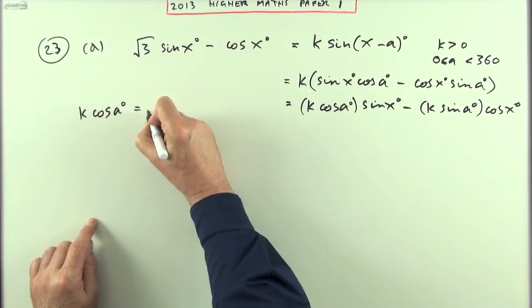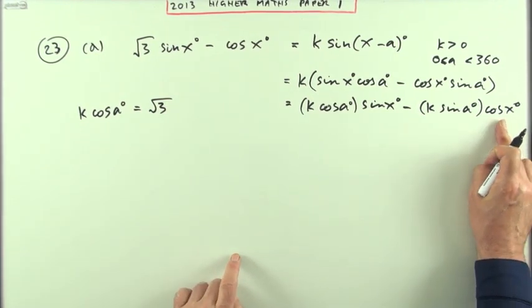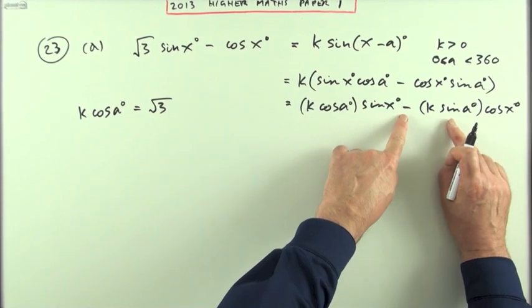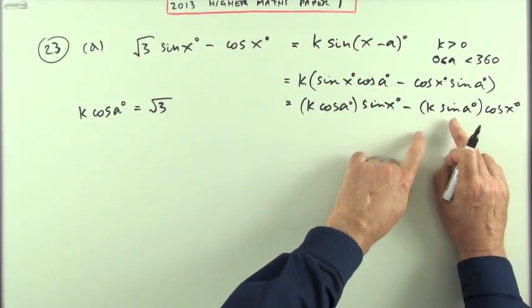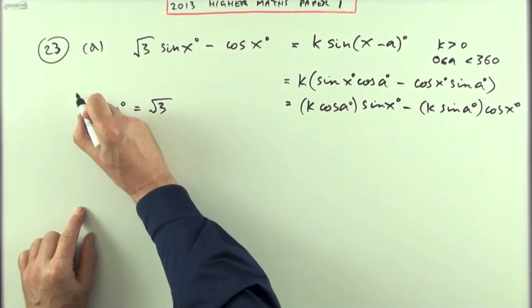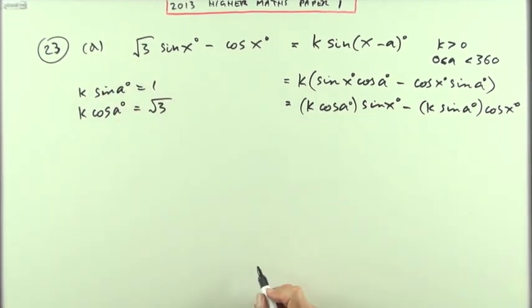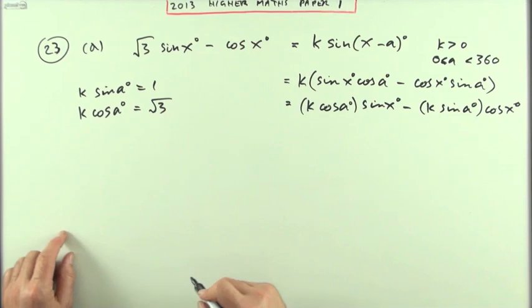So k cos a equals root 3, I can write that over here. And for the cosine term, I should have a negative 1 in front of it. Well I've got a negative k sine a, so the k sine a must just be the one. I'll put that on top: k sine a equals 1.